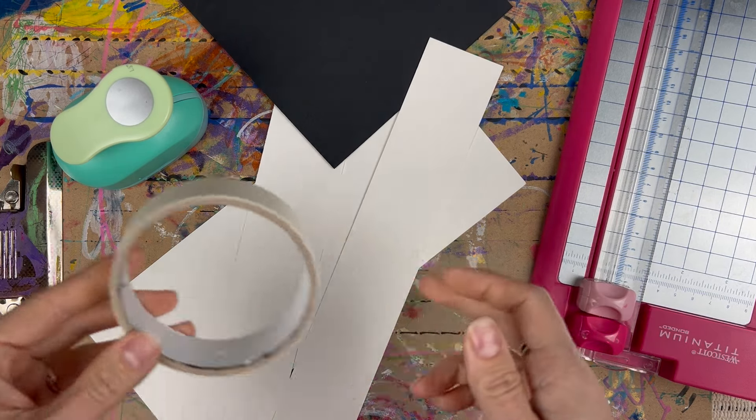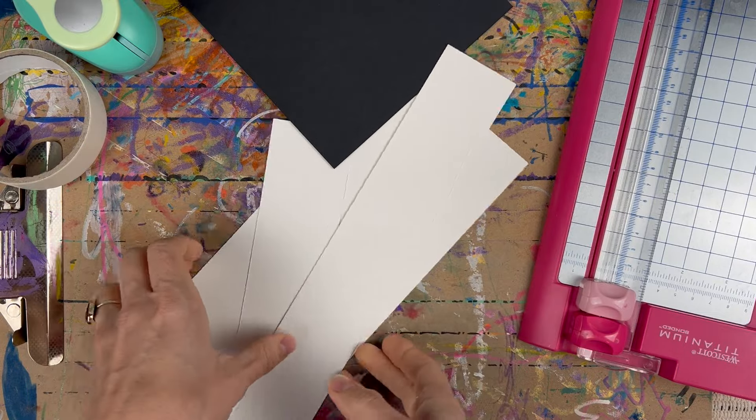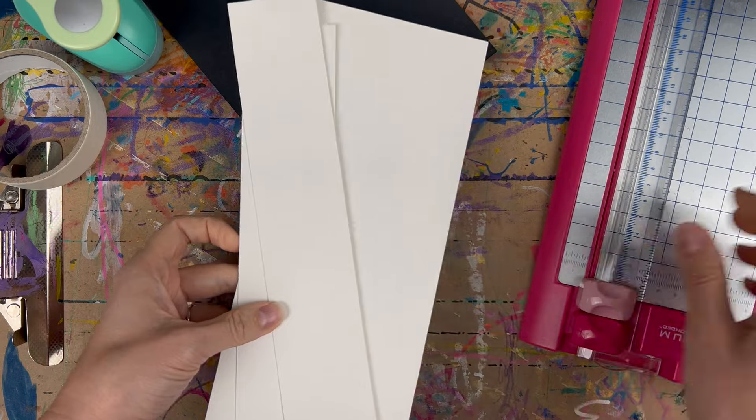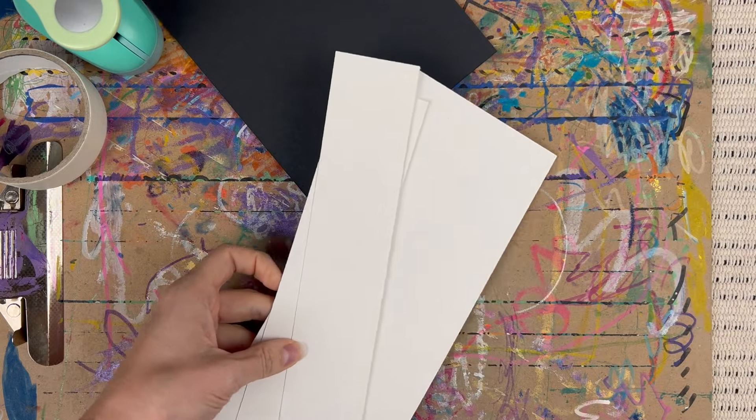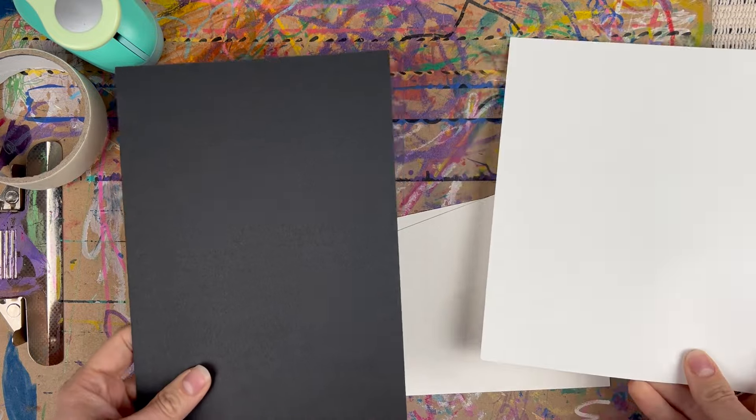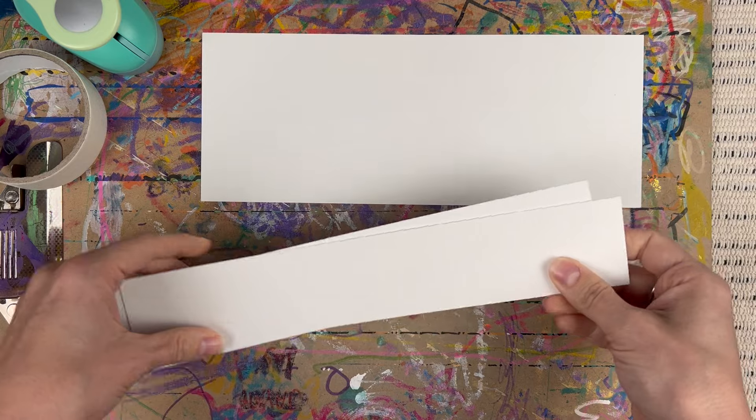I've got my tape, my circle punch. I have some odd scraps of paper here that we're going to use to make the collage pieces. I've got my paper cutter and then for the background I have these black and white pieces of paper.